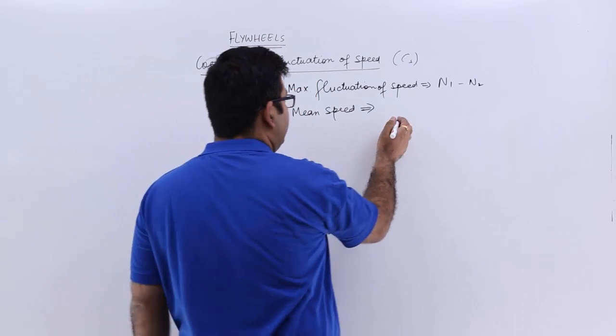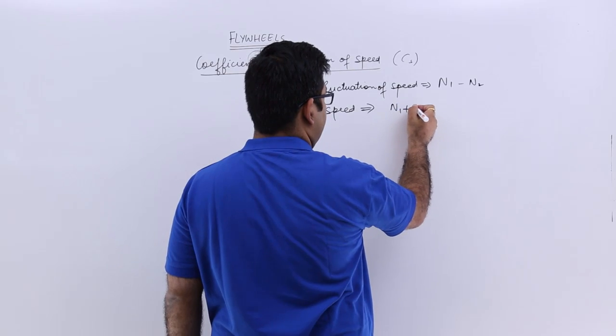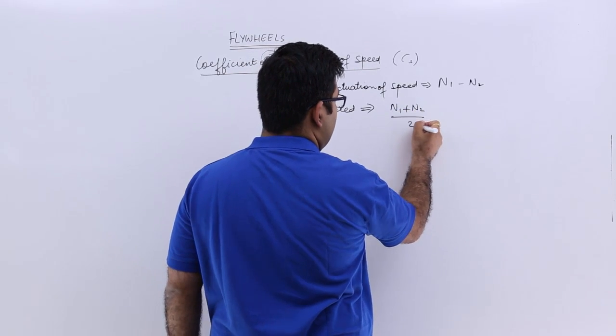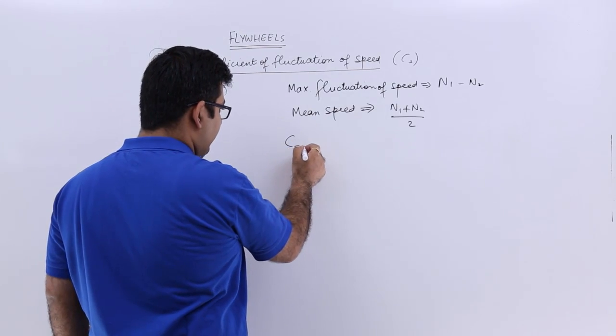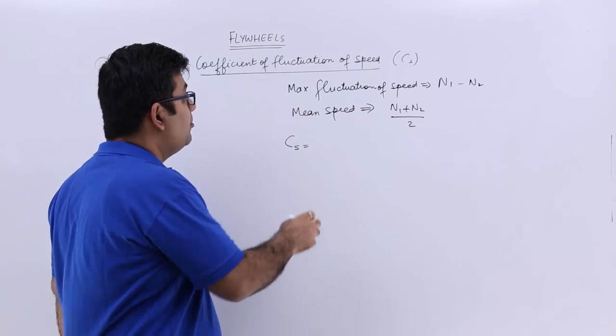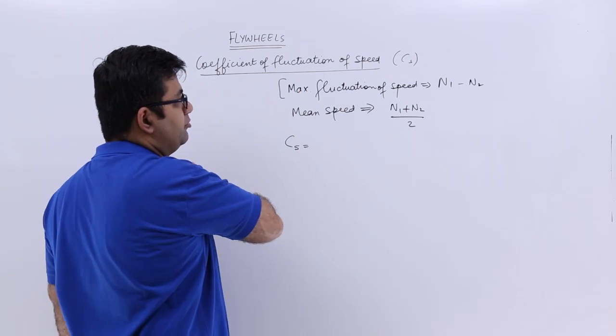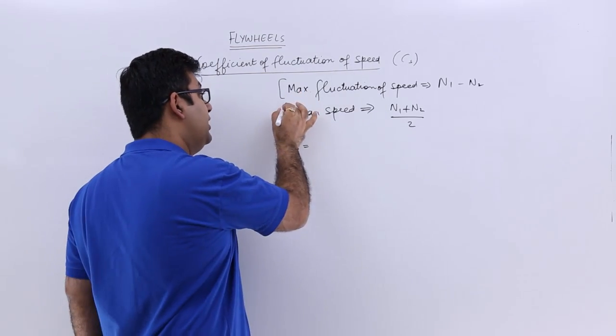And then you have a mean speed which is n1 plus n2 upon 2. So coefficient of fluctuation of speed is the ratio between the maximum fluctuation of speed and the mean speed.